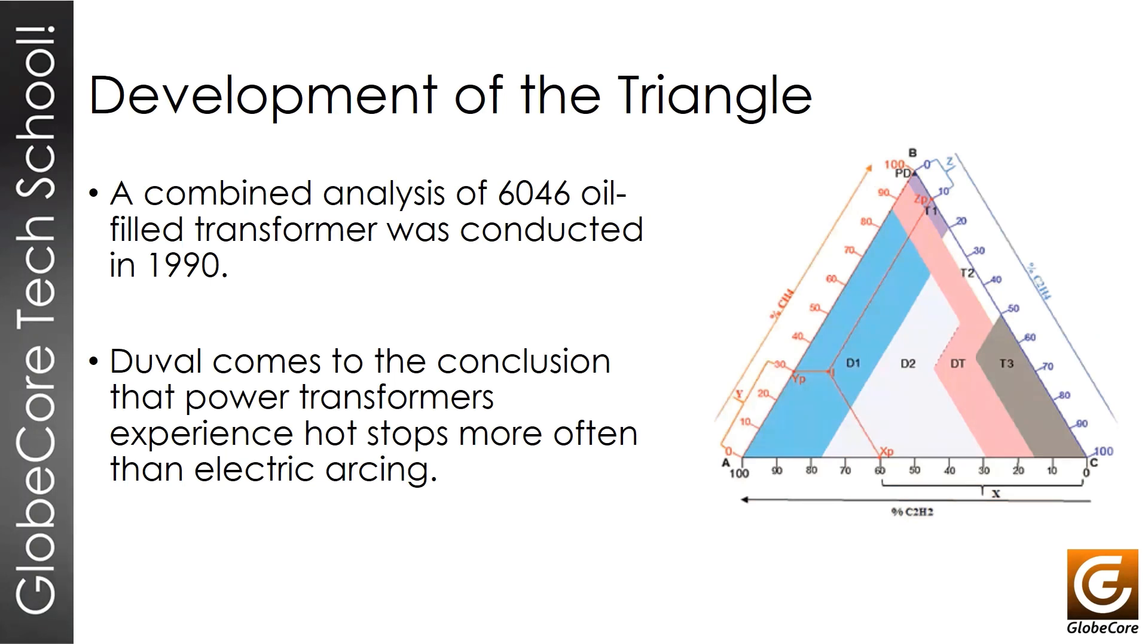There are seven areas inside the triangle. Each area corresponds to a certain fault type. There is fault area D1, fault area D2, thermic fault areas type T3, T2, and type T1. One area is defined as a mixed fault area for both electrical and thermic faults. There is another point, which is quite small at the top of the triangle, but it is extremely important because it gives us the partial discharge area.